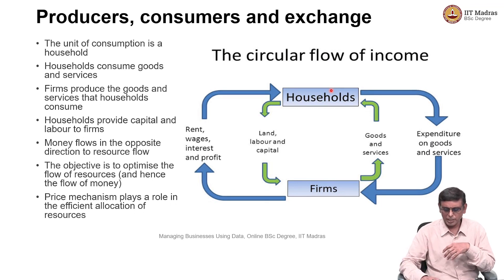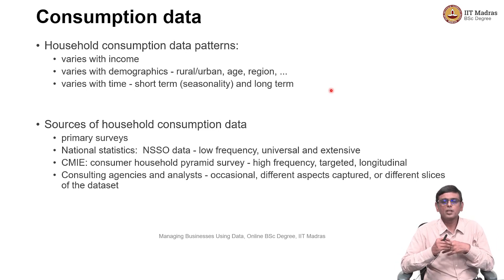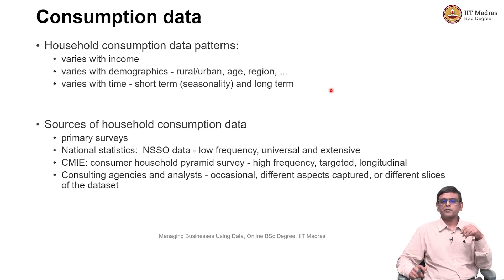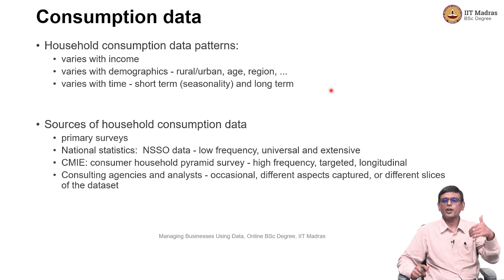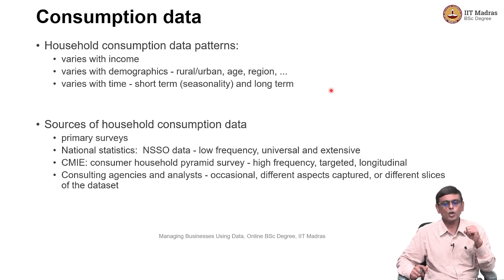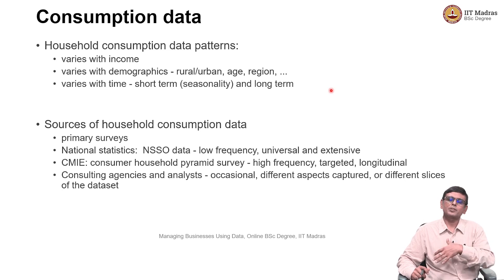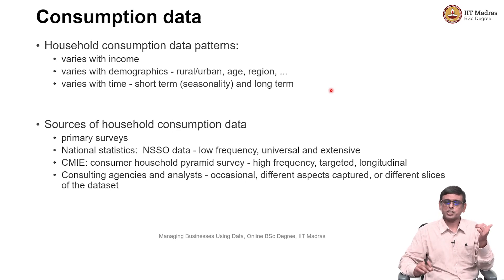Where do you get this consumption data? It turns out that this consumption data can come from many sources. One is that you can do a primary survey. In fact, for the purpose of this course, we showed you that we actually did a primary survey with three different households at different levels of income — one at 15,000 a month, another at 30,000 a month, and one at 50,000 a month. We looked at how consumption patterns change with income and within the consumption basket.